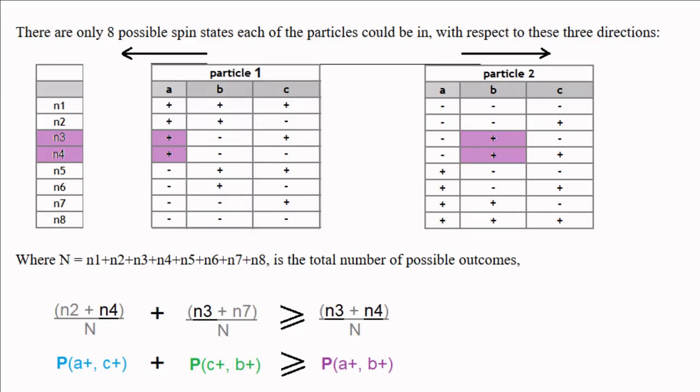It is logically impossible for it to be otherwise, if a, b, and c are all simultaneously existing components of a spin in three space. This is the Bell inequality.